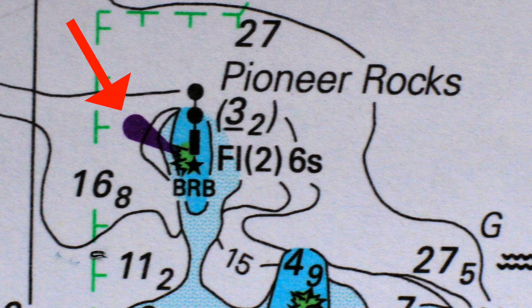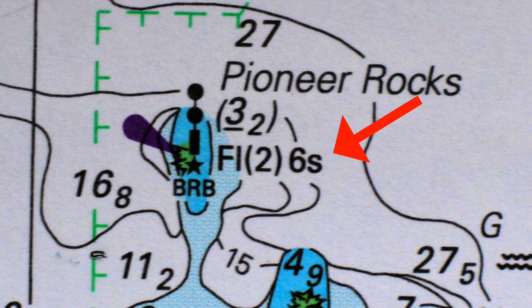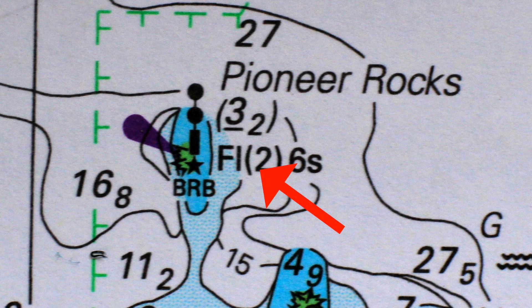The chart will also have a code to show the pattern that the light flashes. The first part of the code is the class of light. FL stands for Flashing, where the dark period is longer than the light.